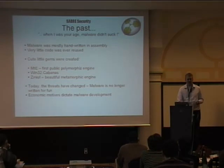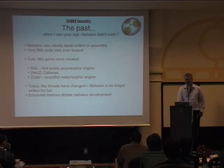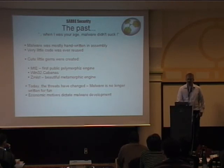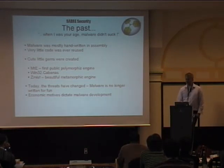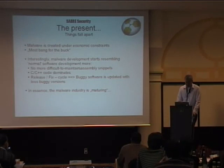The reason for ZMIST was that AV folks started looking for statistical patterns in binaries — they would sweep over binary, and when they noticed statistically deviant code at the end, they flagged an infection. So in order to make sure the virus code did not deviate from the application code, ZMIST would just take the executable and morph it as a whole, so everything would look like garbage and not just the polymorphic stuff at the end. Malware is no longer written for fun — it's mostly written for economic motives, which actually decreases quality to a certain extent, as malware is created under economic constraints.